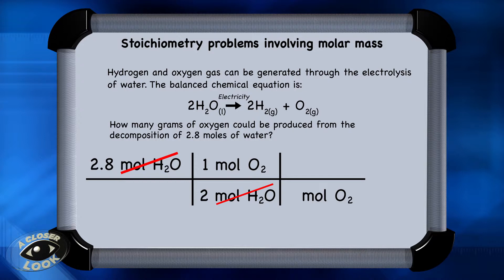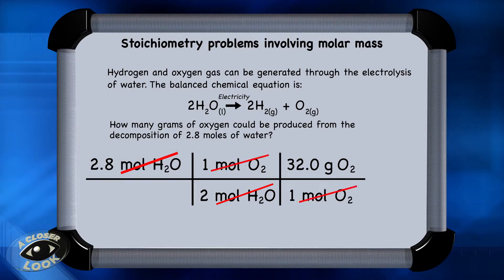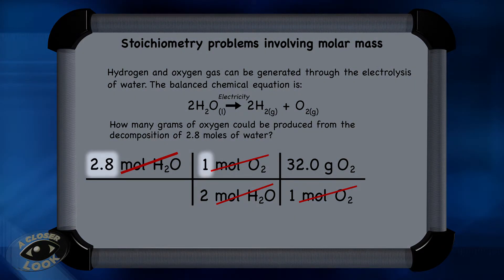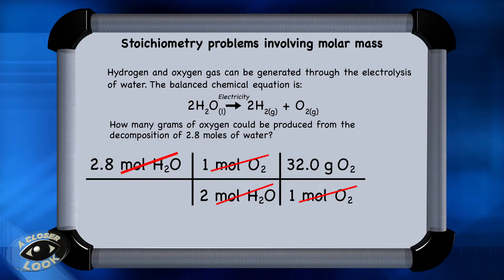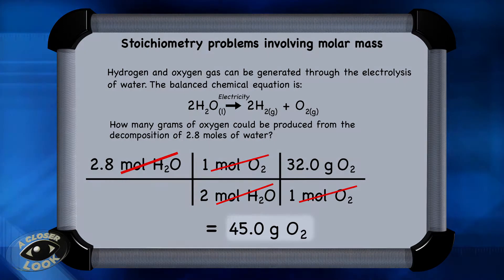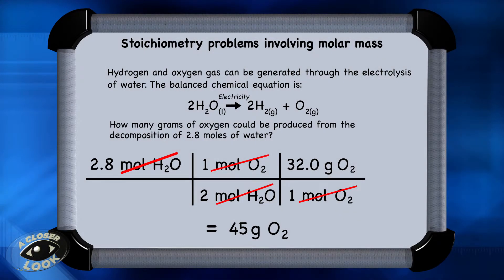Use the molar mass of oxygen — found by adding two oxygens from the periodic table. One mole of oxygen has a mass of 32.0 grams. Cancel out the moles of oxygen units, leaving grams of oxygen in the upper right-hand corner. Now multiply 2.8 times 1 times 32, then divide by 2 times 1, which is 2. The answer is 45 grams of oxygen, rounded to two significant figures. According to this reaction, if 2.8 moles of water were to react, you could produce 45 grams of oxygen.